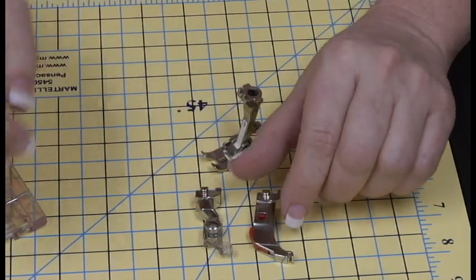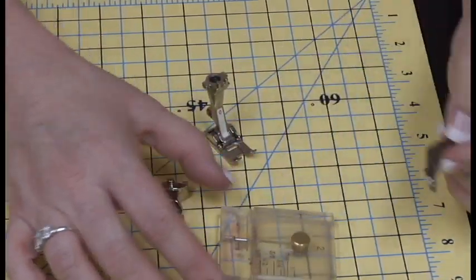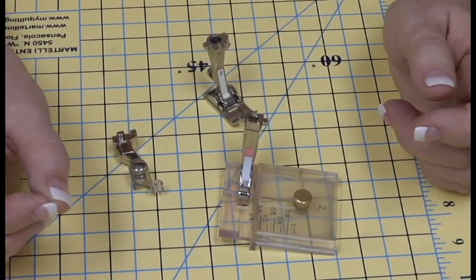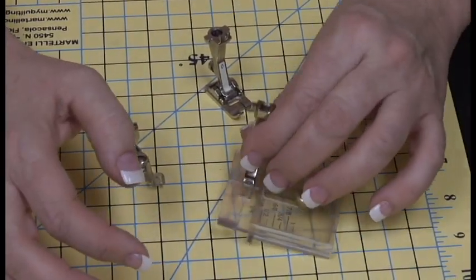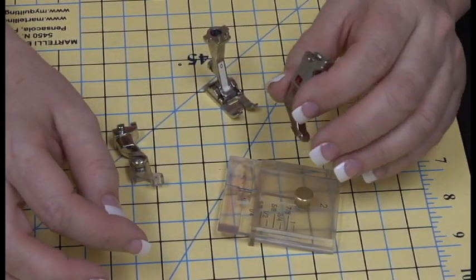Universal foot—Martelli makes a universal foot, but so does Janome, New Home, Elna, Baby Lock, Brother, and new Singer feet. The snaps on and it snaps off.